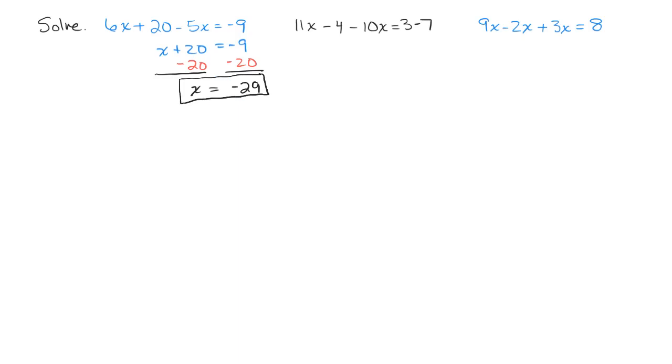Now the only way you know for sure is to check it. So let's go ahead and check this one. So I'm going to write down the original problem. 6x plus 20 minus 5x equals negative 9.